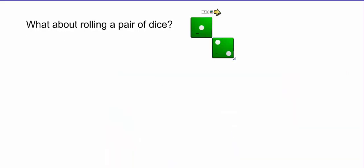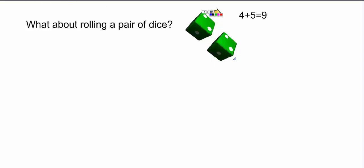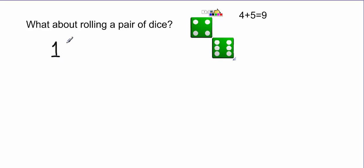What about rolling a pair of dice? We can ask: how many possibilities are there when we roll a pair of dice? There are possibilities like four and five, two and two, two and six — all kinds of possibilities. A tree diagram helps here because rolling a pair of dice is made up of two simpler events: the first die landing and the second die landing.